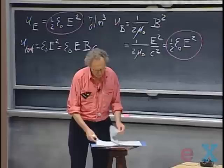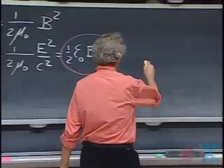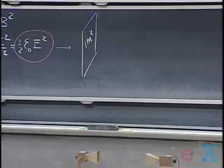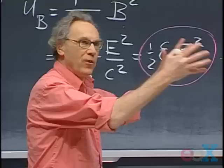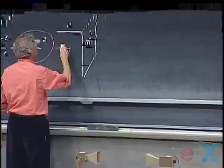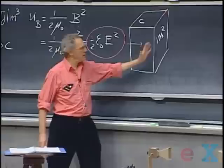Now I want to ask: if electromagnetic waves come by, how much energy passes through one square meter per second? It's like an energy flux. I have here one square meter perpendicular to the direction the electromagnetic wave is going. In one second, light travels a distance C — three hundred thousand kilometers. That side of this box is what light travels in one second, and I'm going to calculate how much energy comes through this one square meter in one second.